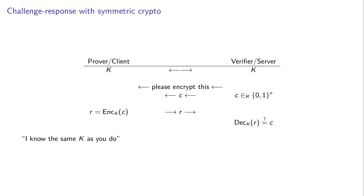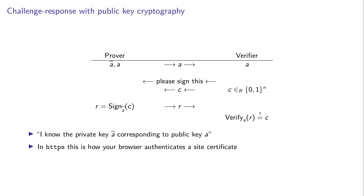The verifier says: I'm going to send you a challenge C and I want you to encrypt it using the key K. So the server sends challenge C, the client encrypts it computing R which is the response, sends R, and the verifier checks whether this is correct. This is interesting because we have a sort of proof of knowledge of K while K is not being sent over the network. This is basic challenge-response using symmetric crypto.